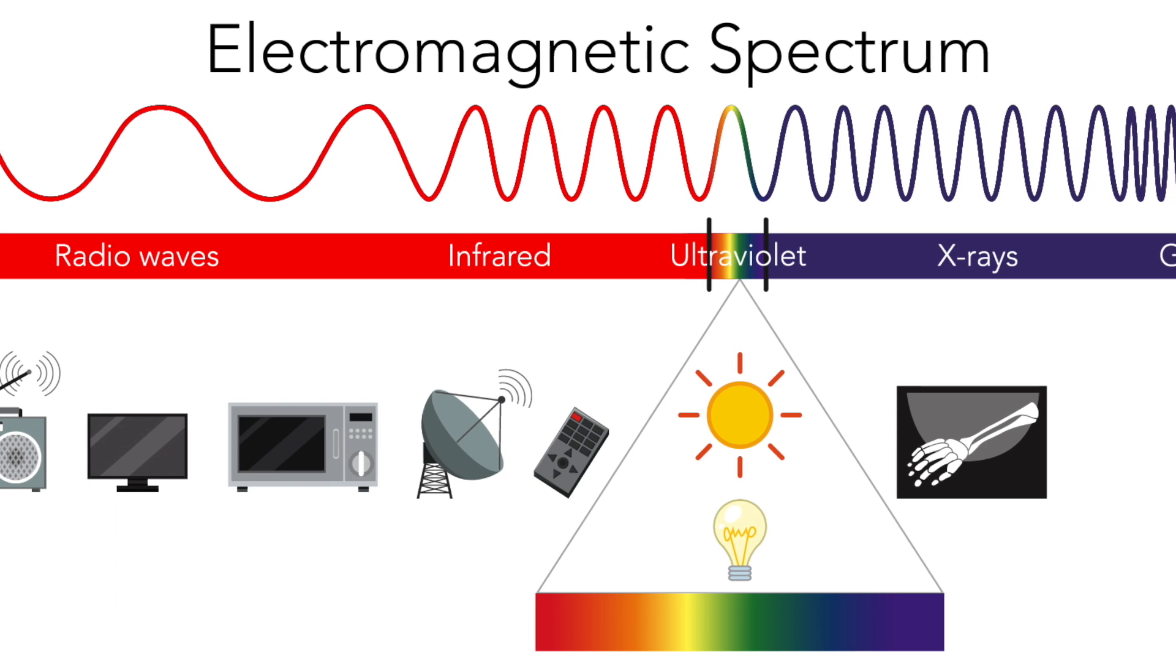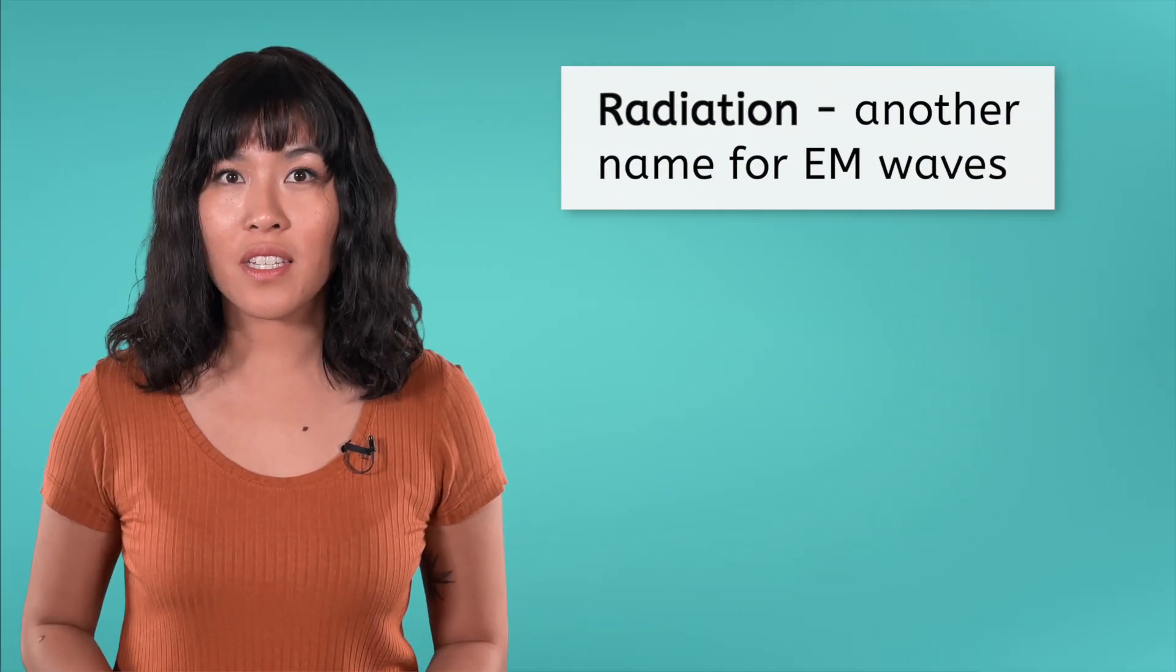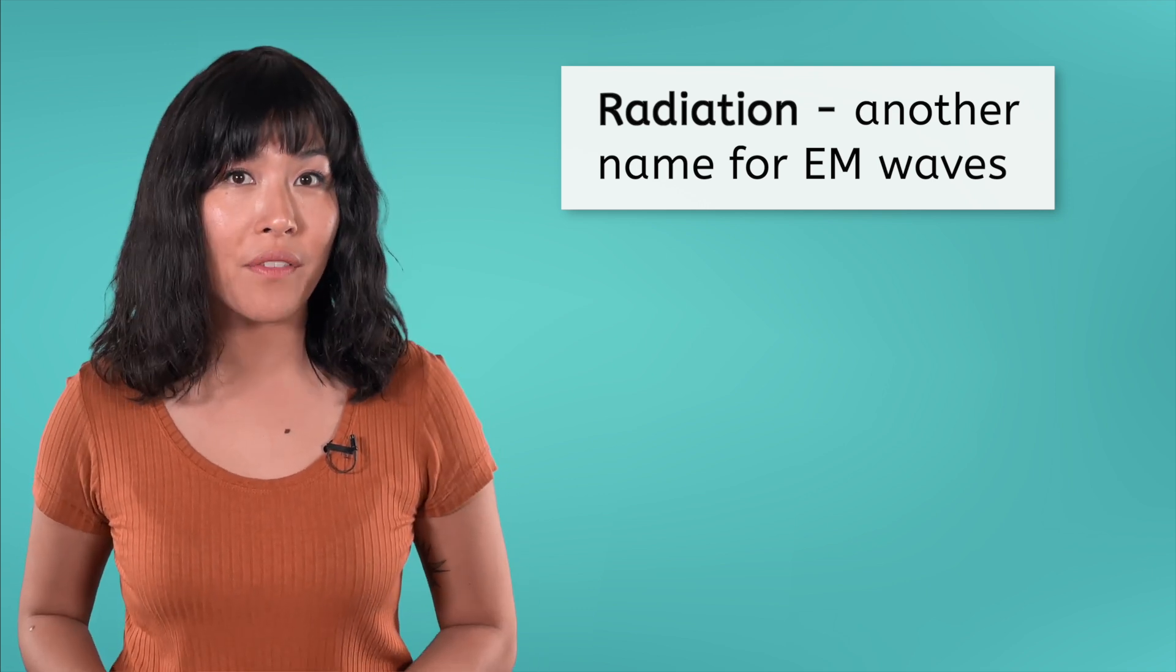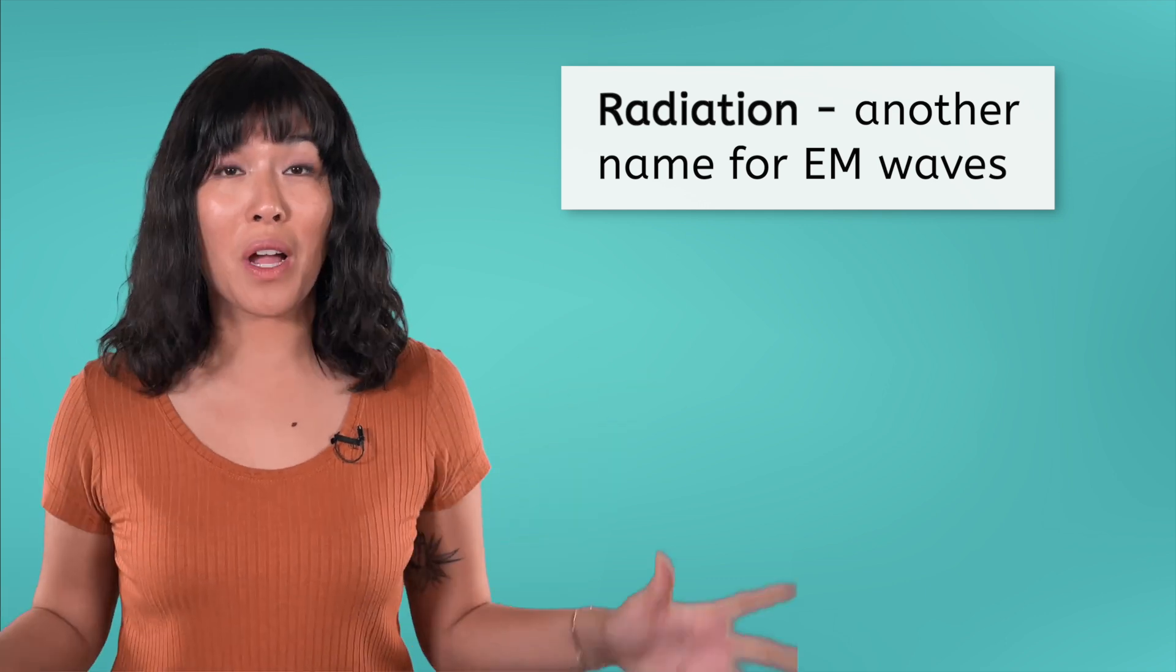EM waves are also sometimes referred to as radiation. Radiation is often seen as something scary, but it's just another word for electromagnetic waves, or light in general. And it's happening all around us, all the time. Even the light reaching your eyes from the screen this video is playing on is a form of radiation. As we go through the spectrum, we'll see which types of radiation are harmless, and which we need to be more careful around. But in their own ways, all types of radiation are useful to us.